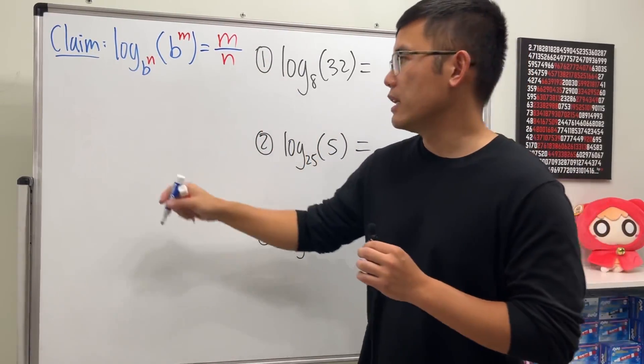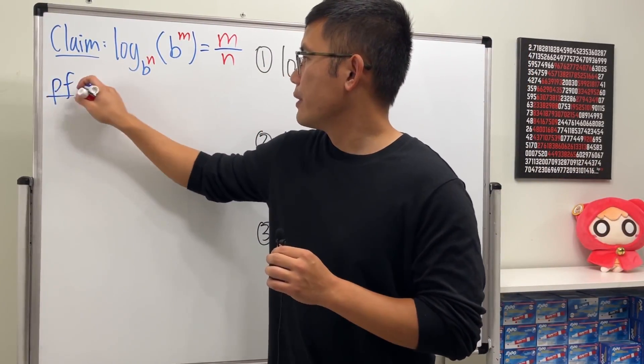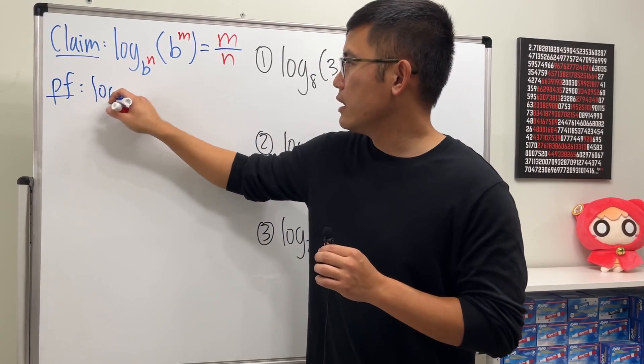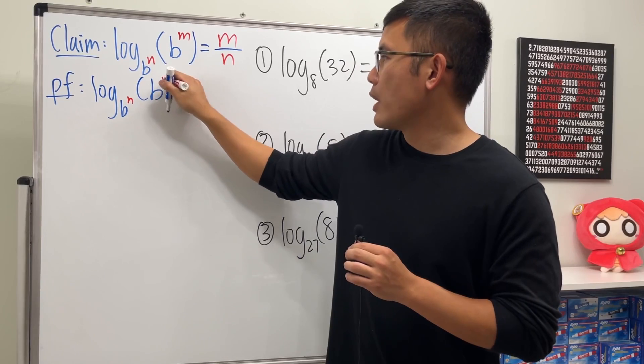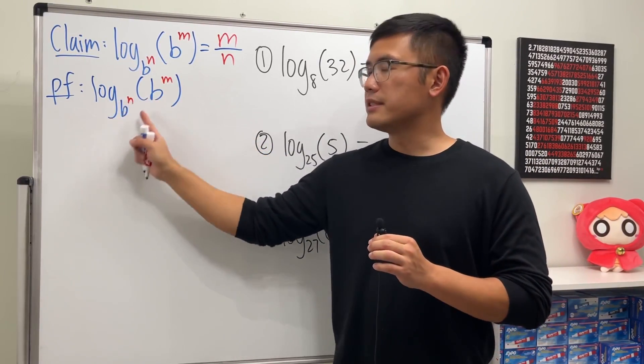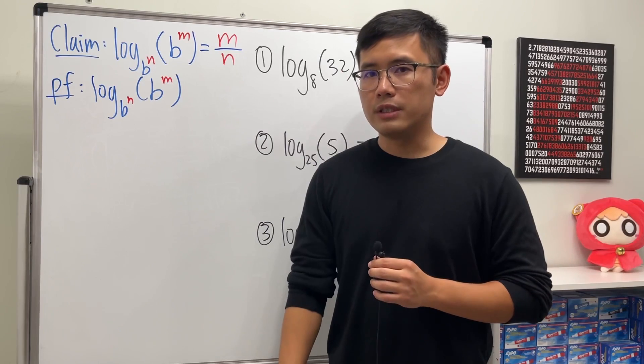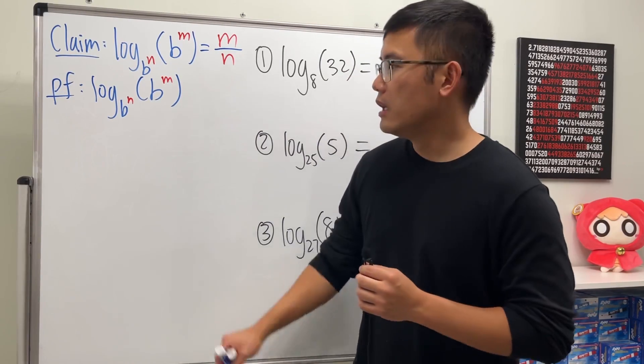Now let's take a look at the proof. Let me write this again: log base b^n of b^m. So this right here is the input, this right here is the base. What we can do first is use the change of base formula.